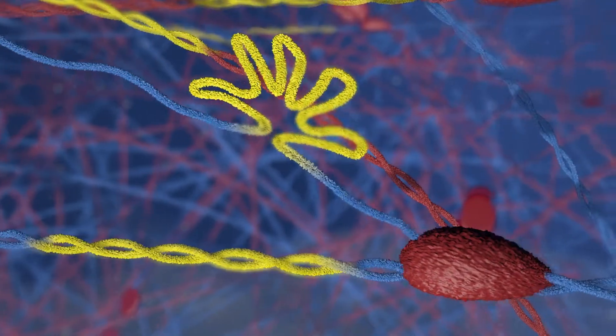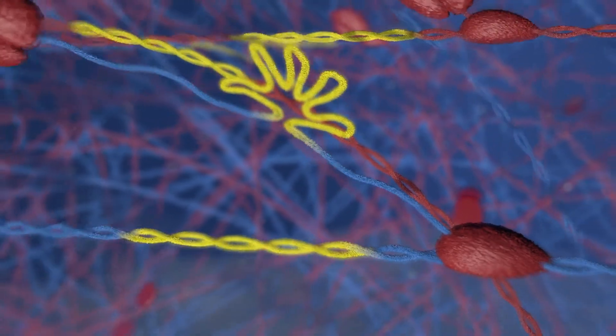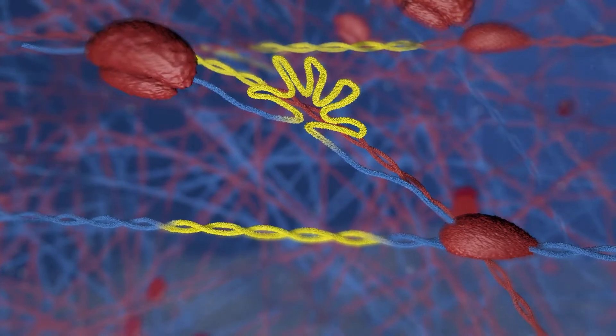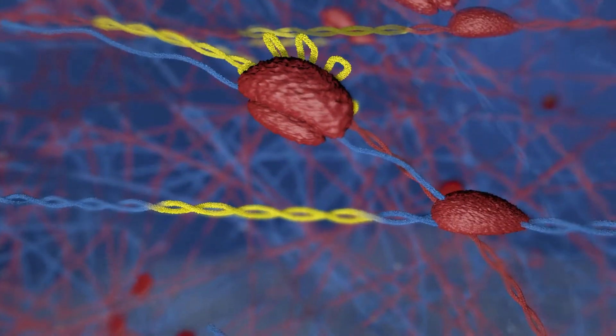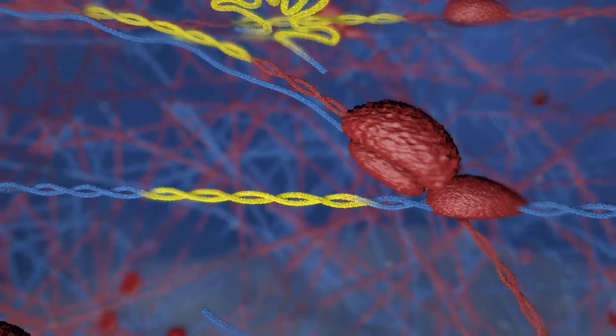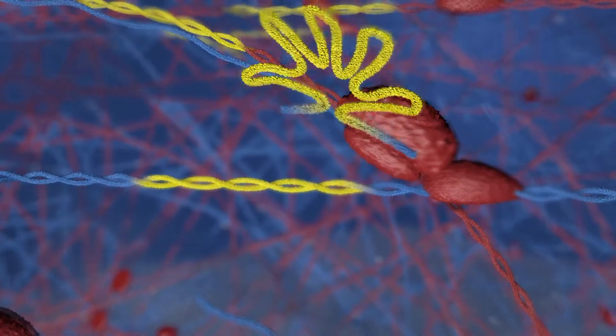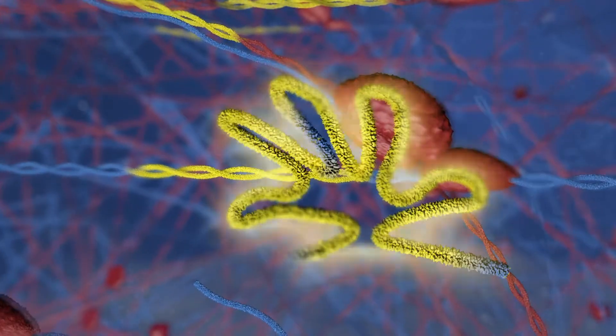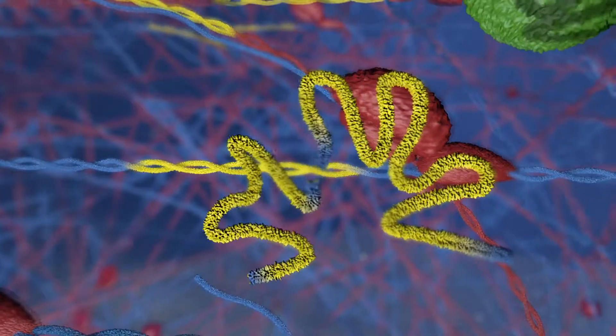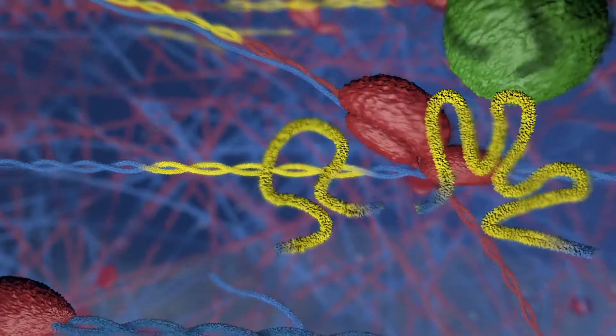In the evolutionary transition from group 2 to spliceosomal introns, group 2 introns underwent fragmentation into shorter spliceosomal introns, whose removal required activities in trans, provided by intron-derived RNA components in the spliceosome, shown here in green.